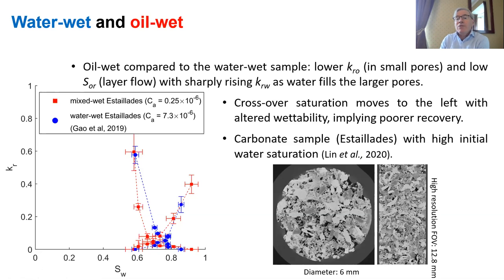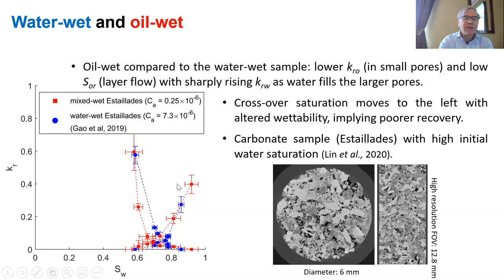You also see the residual saturation is low — typically less than 20% — because although the oil flows slowly in small pores, it's connected in the nooks and crannies and in layers, so you can drain it down to a low saturation. Typically, if it's oil wet, we see residual saturations less than 20% and a final water relative permeability that's normally about 40% or greater.